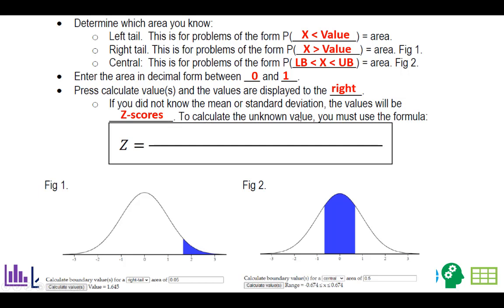Then you can actually calculate your unknown value using the formula: value minus the mean, divided by standard deviation equals z-score. So you know the z-score from the applet, and then you know two of these three values. Then it's a matter of doing some algebra to solve it.